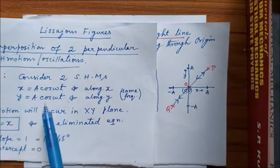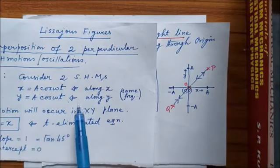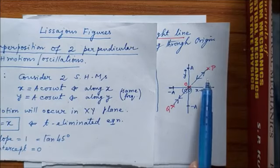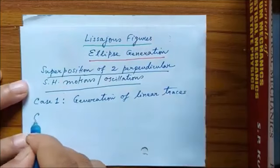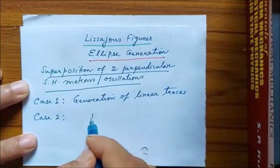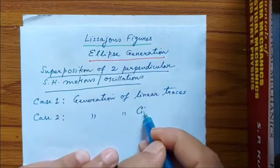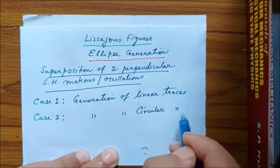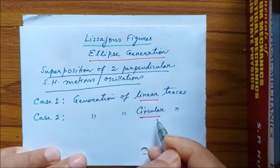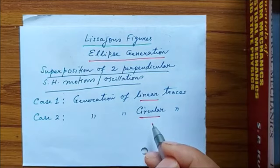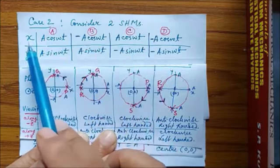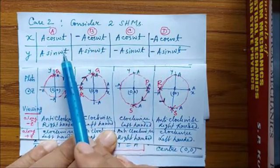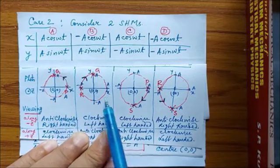Superposition of these vibrations, one along x and one along y, leads to generation of a linear trace, the equation of which is y equal to x. And in Case 2, we discussed generation of circular traces, which can be left-handed or right-handed depending upon how you view it. These are alternate prescriptions for x and y which are mutually perpendicular, and on superposition lead to circular traces traced in the manner shown.